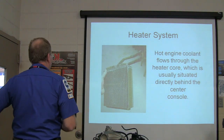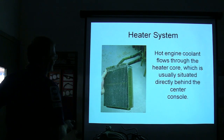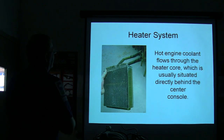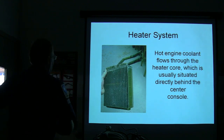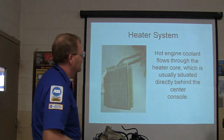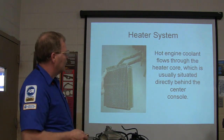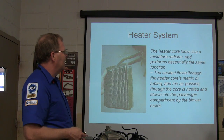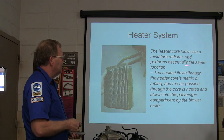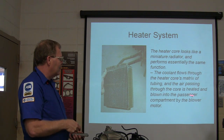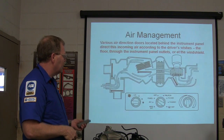This is what the heater core looks like — you might notice one pipe is bigger than the other, which makes it hard to hook the hoses up backwards. You don't want to pump coolant in the wrong direction or it will swell up and bust the core. Most heater cores nowadays are aluminum. It's usually behind the center console — it looks like a little radiator. It's a heat exchanger with a matrix of tubes and air passages, blown into the passenger compartment by the blower motor.